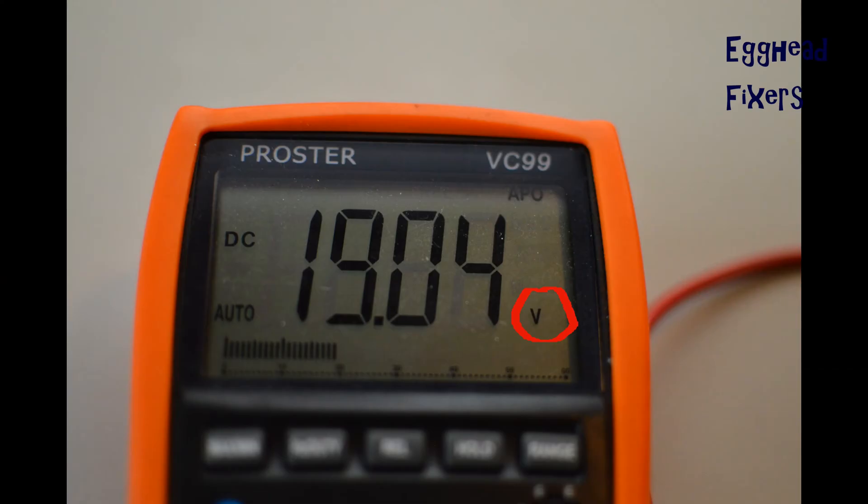Once you hold this, the multimeter should read volts. For example, this one says 19.04. Within the margin of error, that's correct for this charger. So this is a good charger.